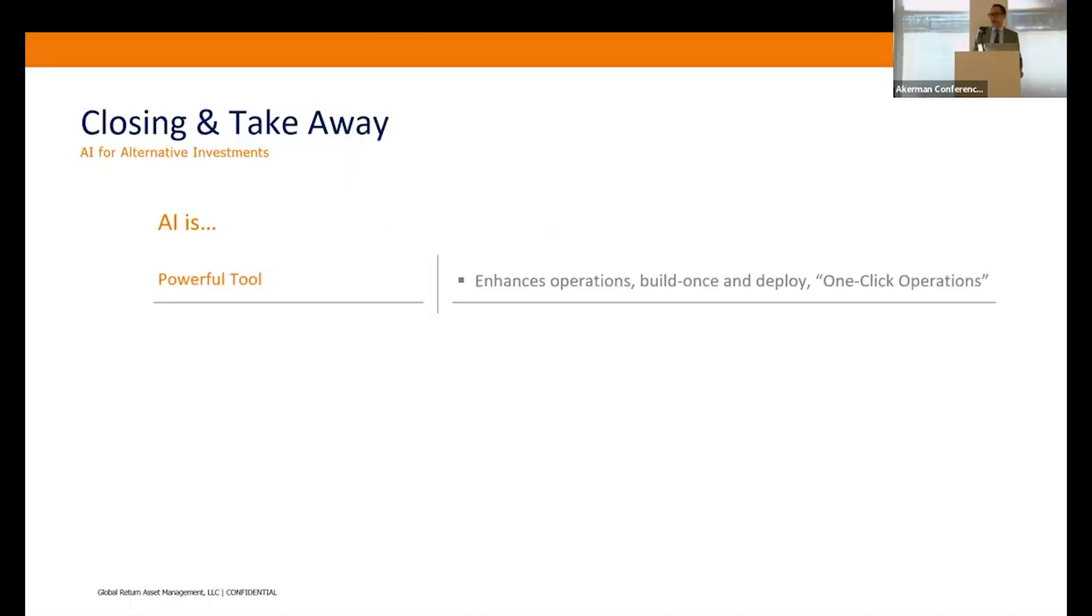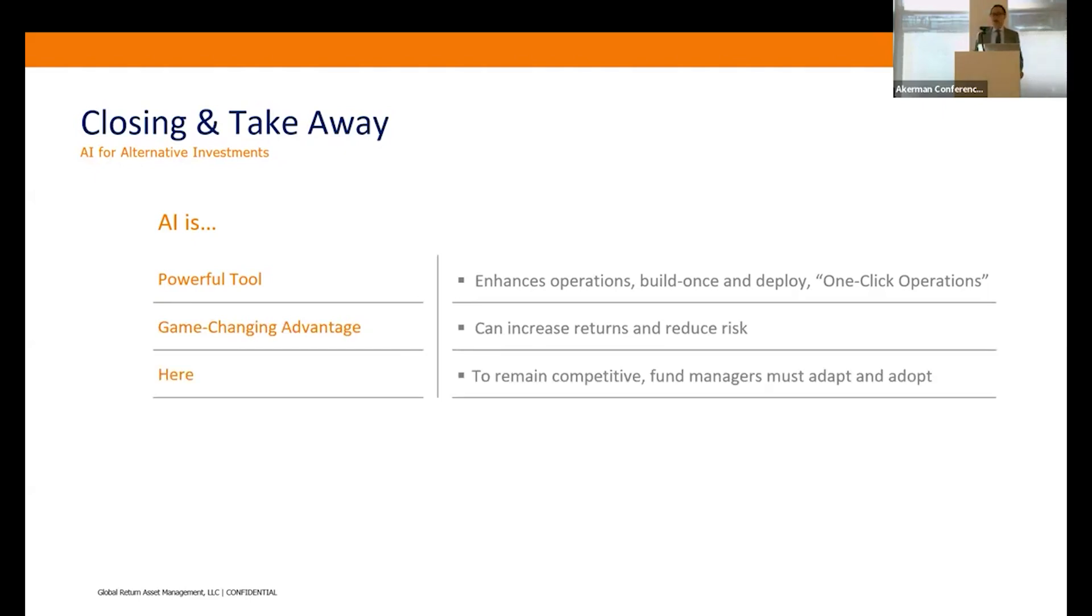Closing takeaways: AI is a powerful tool. It enhances operations—build it once and deploy it, frees up a significant amount of time. One-click operations—it's a game-changing advantage. It can increase returns and reduce risk. And lastly, it's here. To remain competitive, fund managers need to adapt and adopt. I'll leave you with this: the future of alternative investing is smart technology and smart managers who understand how to build the technology. And yes, that was written by AI.